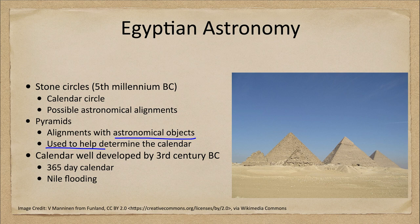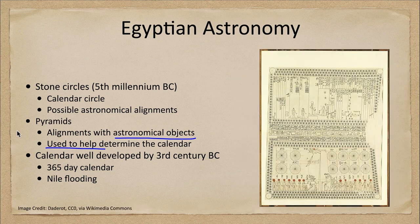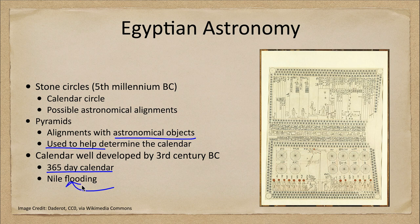The Egyptians had a very well-developed calendar by about the third century BC. Here we see a little bit of one of the calendar recordings that has been made. They actually did use a 365-day calendar, and it was very important to have the calendar to be able to record things so that you could then determine when certain events were going to occur.